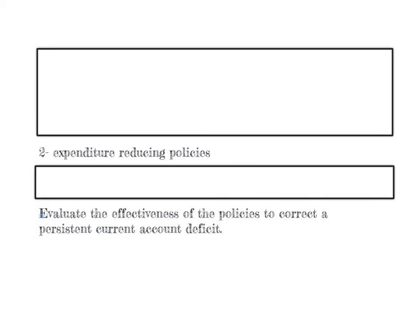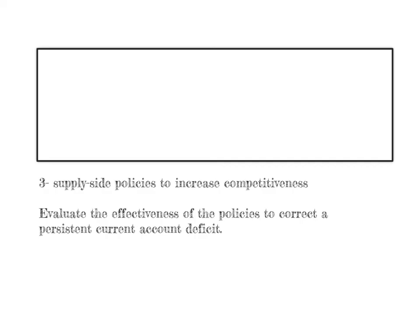Regarding expenditure reducing policies: adopting contractionary fiscal and monetary policies to decrease aggregate demand will hurt the overall economy because it slows economic growth and could lead to higher unemployment. So expenditure reducing policies also have a downside — they may affect domestic growth and employment negatively. Supply side policies to increase competitiveness are great, but they're very costly, so taxpayers might not be happy. They usually only show their impact in the long run, meaning there's a lot of short-term pain and high opportunity cost for very long-term gain, so they might not be as politically popular.